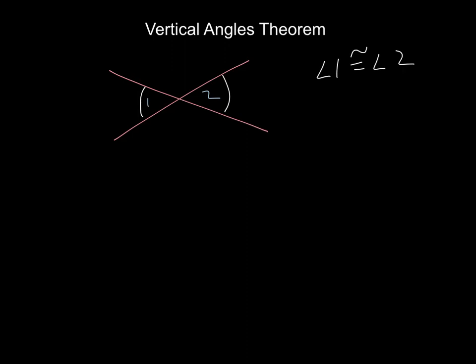We're going to use the vertical angles theorem interchangeably. If we want to just say that they're equal, the vertical angles theorem technically says that angle 1 is congruent to angle 2, but you can also use it to say the measure of angle 1 equals the measure of angle 2. That's how we'll use it in our course.